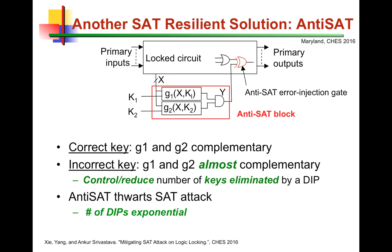Anti-SAT was proposed very recently, last year, in CHESS. The idea is to insert an error into a circuit with a block — the anti-SAT block — which receives the keys as well as some internal signals from the circuit. This anti-SAT block consists of two complementary blocks inside, and these two complementary blocks are AND'd together to produce the signal that inserts an error into the original circuit.